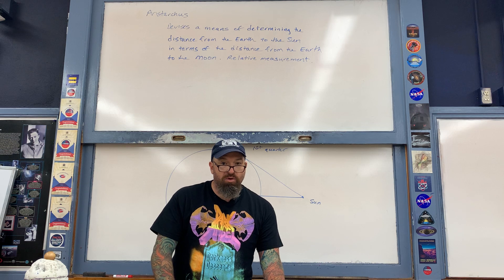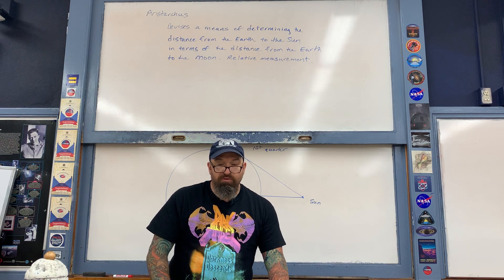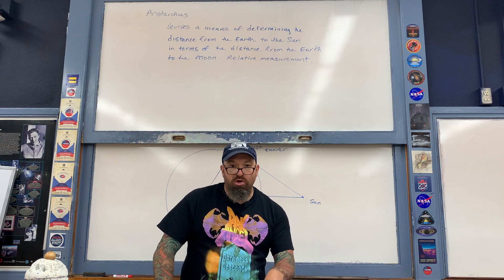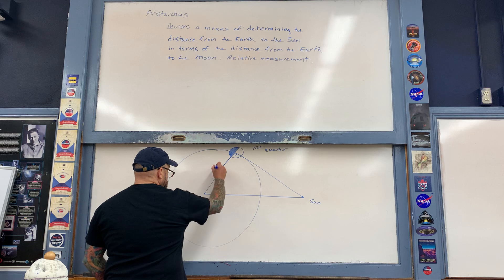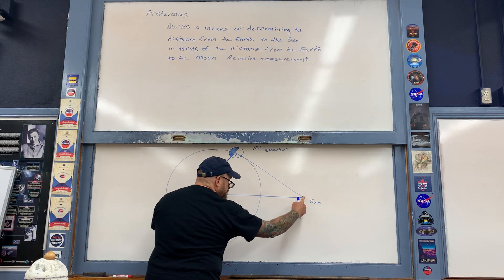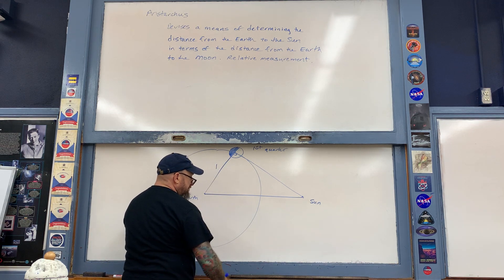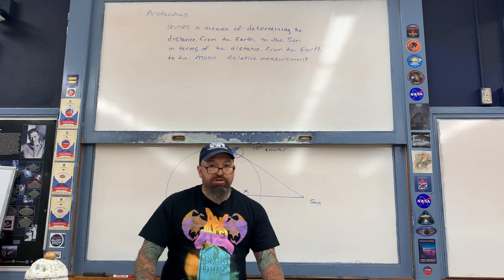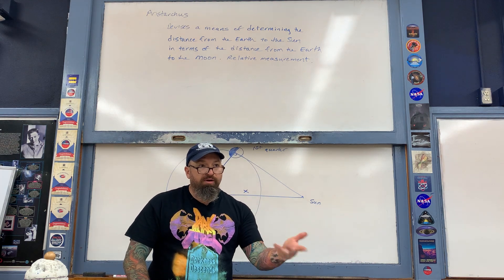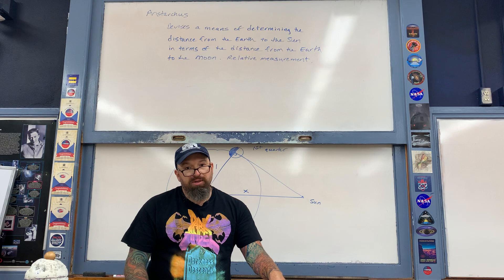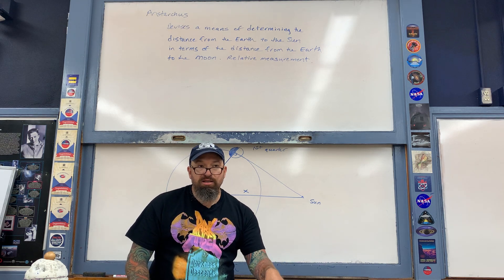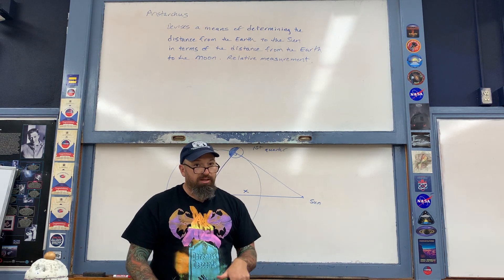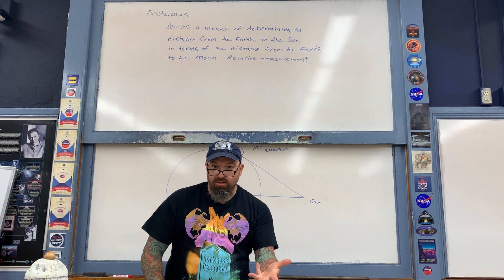On this right triangle, Aristarchus labels the following: we first of all have the distance from the Earth to the Moon. Aristarchus did not know what that distance was — that measurement didn't come for a couple of centuries after Aristarchus — so he merely calls that distance one. The hypotenuse of this right triangle is the distance from the Earth to the Sun, that's our unknown value X. So if we figure out that X equals, say, 10, that simply means the Sun is 10 times further away from the Earth than the Moon is. That is what is meant by a relative measurement.